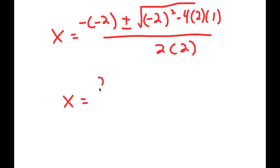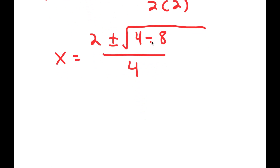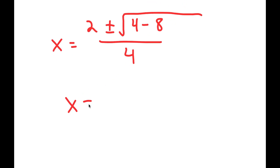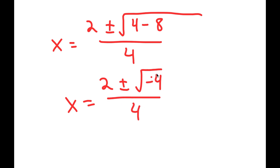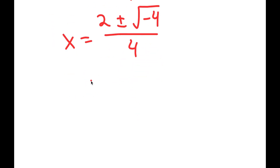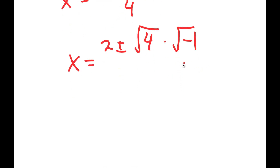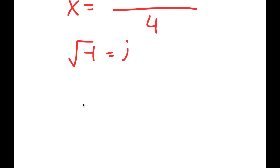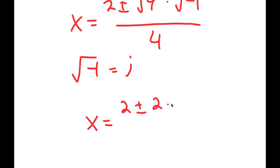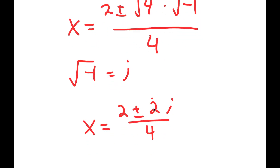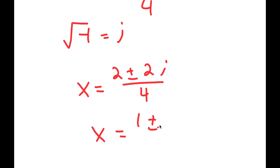This simplifies to 2 plus or minus the square root of 4 minus 8 over 4. Now, 4 minus 8 is negative 4, so I get 2 plus or minus the square root of negative 4 over 4. We can take the square root of a negative number using imaginary numbers. The square root of negative 4 is the square root of 4 times the square root of negative 1, which is 2i. So x equals 2 plus or minus 2i over 4, which simplifies to 1 plus or minus i over 2.